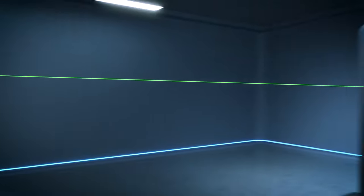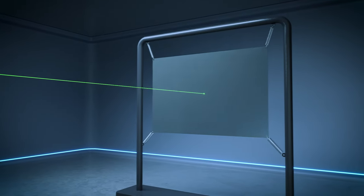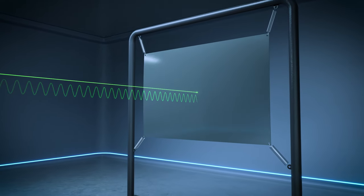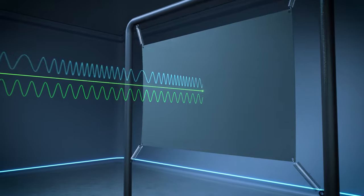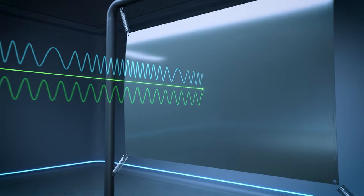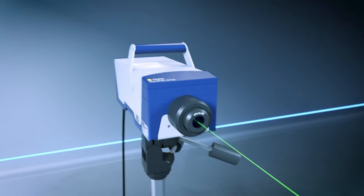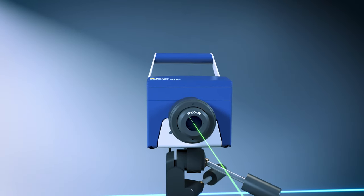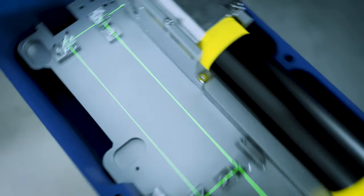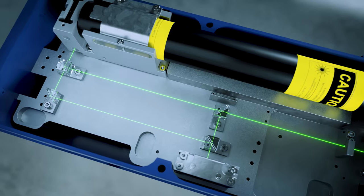Laser vibrometry uses the Doppler effect to measure vibrations. If light is scattered from a moving object, its frequency is changed slightly. Within a Polytech vibrometer, a high-precision interferometer detects the minute frequency shifts of the backscattered laser light.